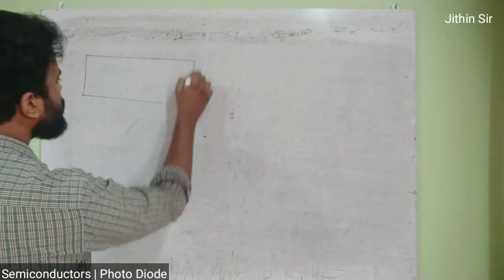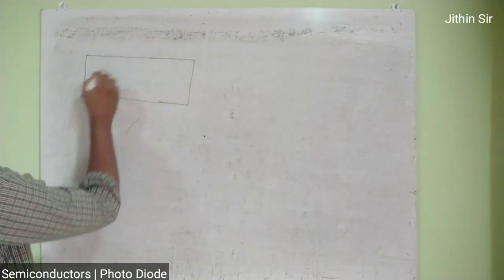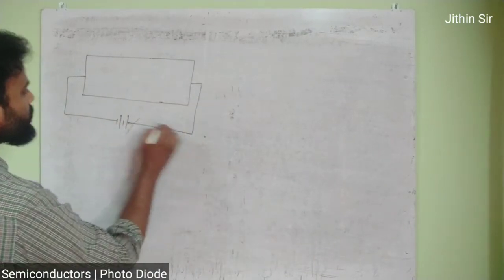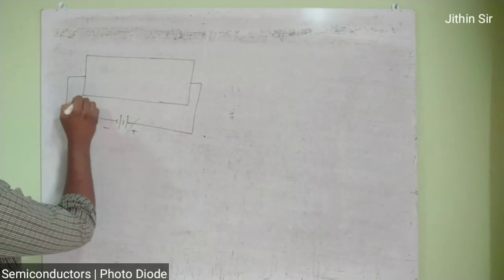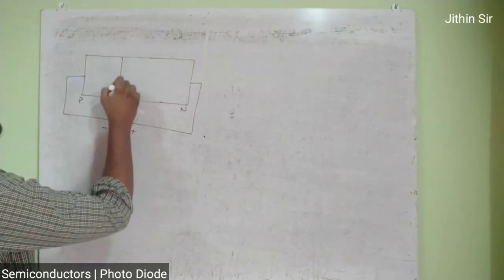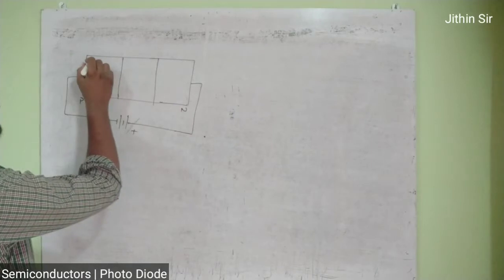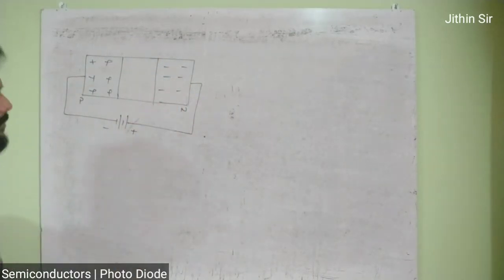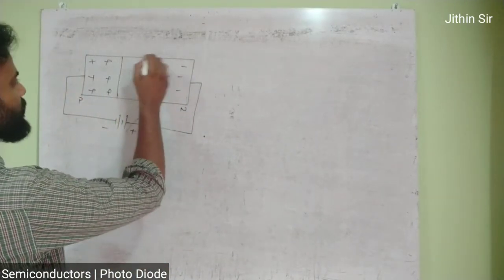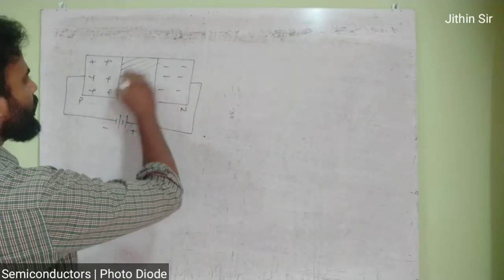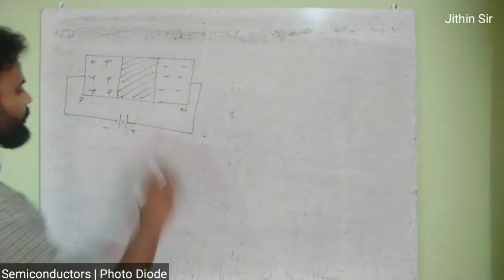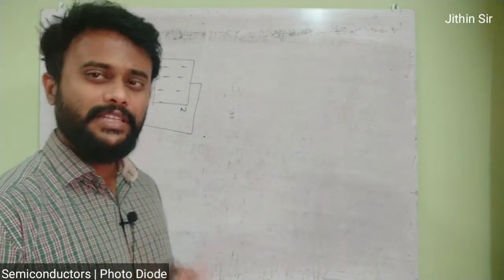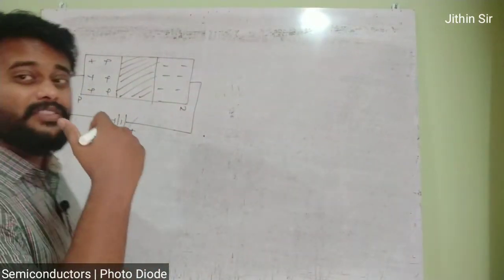مان لیجیے یہ آپ کا diode ہے، اور آپ نے اس diode کو reverse bias پر connect کر دیا ہے۔ یہ P region ہے اور یہ N region ہے۔ بیچ میں depletion region ہوتا ہے جس میں free electrons یا holes نہیں ہوتے۔ Depletion region میں کوئی free charges نہیں ہوتی، اسی وجہ سے reverse bias میں generally there is no current flow۔